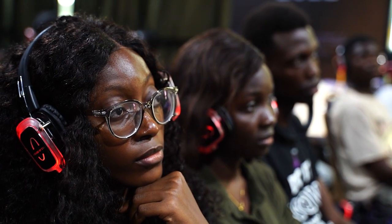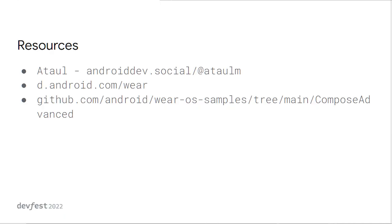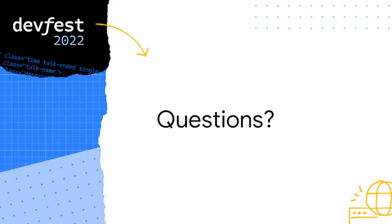Once connected, you can deploy apps directly to your watch without any wires or ADB configuration. For further learning, check out developer.android.com, and the GitHub android/wear-os-samples compose-advanced-samples repository — those samples are really detailed and provided most of what I used to build this demo. Any questions?